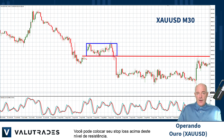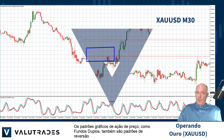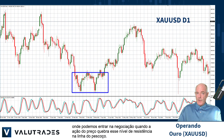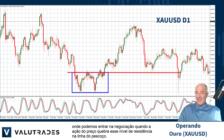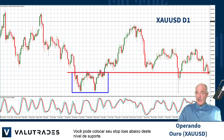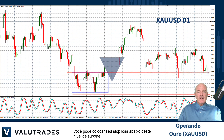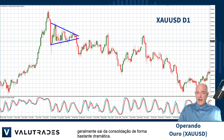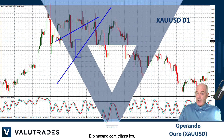You can place your stop loss above this level of resistance. Price action chart patterns like double bottoms are also reversal patterns where we can enter trades when price action breaks this level of resistance at the neckline. You can place your stop loss below this level of support. We also very often see patterns like symmetrical pennants, where price action will usually break out of the consolidation quite dramatically. And the same with triangles.